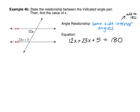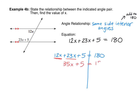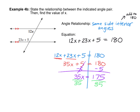Let's solve that equation. On the left side, combine like terms: 12x and 23x give 35x, so we have 35x plus 5 equals 180. Subtract 5 from each side to get 35x equals 175. Divide each side by 35, and 175 divided by 35 is 5. So x equals 5.